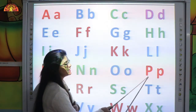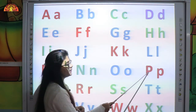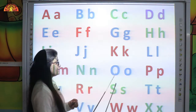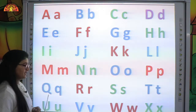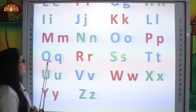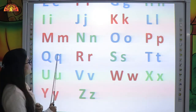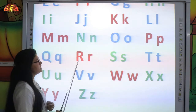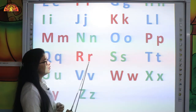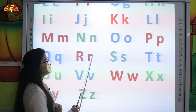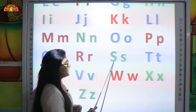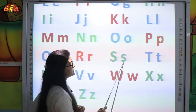This is uppercase letter P. And this is lowercase letter P. Next, which letter is this? This is uppercase letter Q. And this is lowercase letter Q. This is uppercase letter R. And this is lowercase letter R. This is uppercase letter S. And this is lowercase letter S.